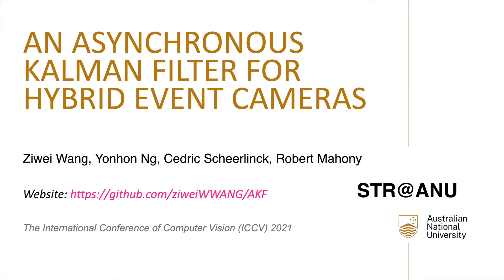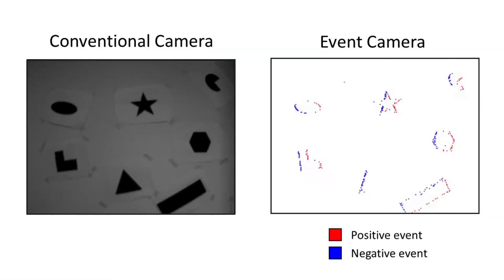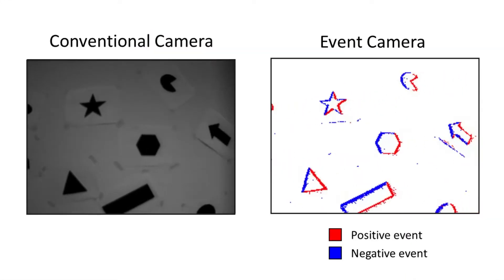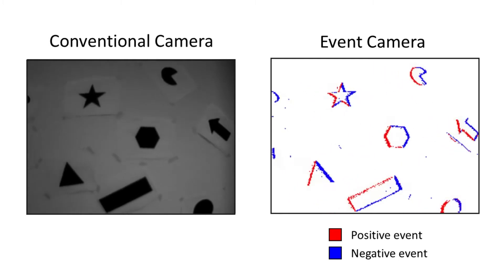An asynchronous Kalman filter for hybrid event cameras. Conventional frame-based video cameras see the world as a series of image frames captured at fixed frame rate.